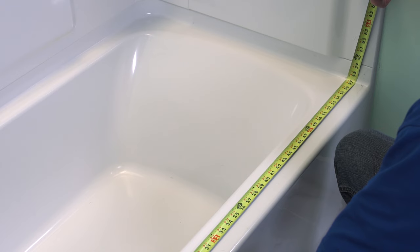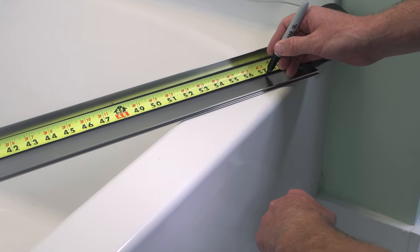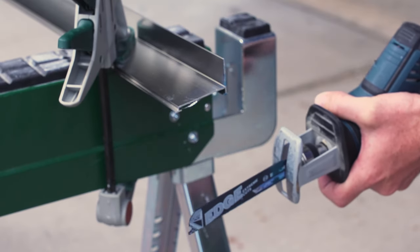Clean the tub edge and walls. Measure the distance of the threshold and subtract 3/8 of an inch. Cut the bottom track to that length.